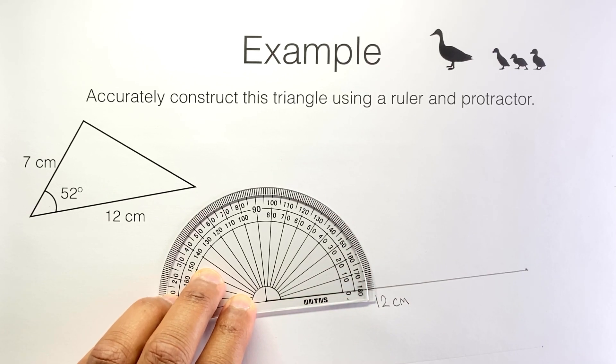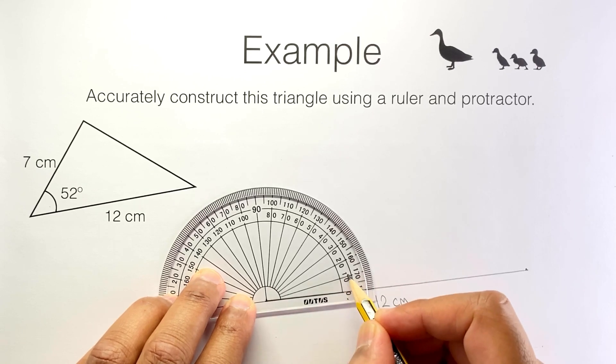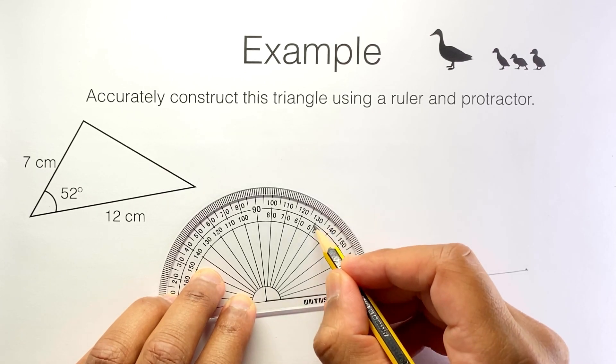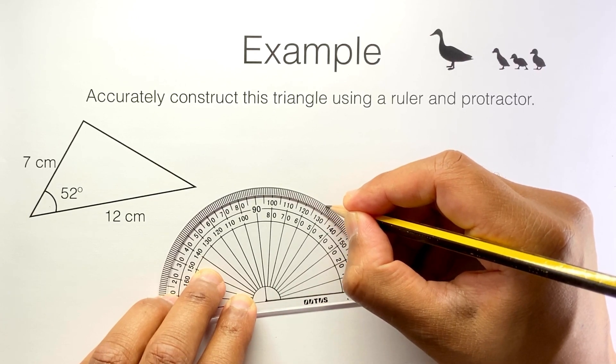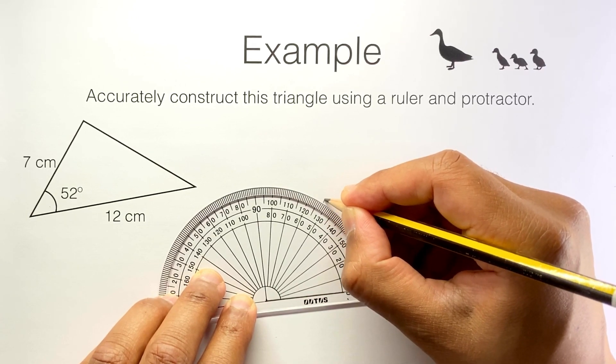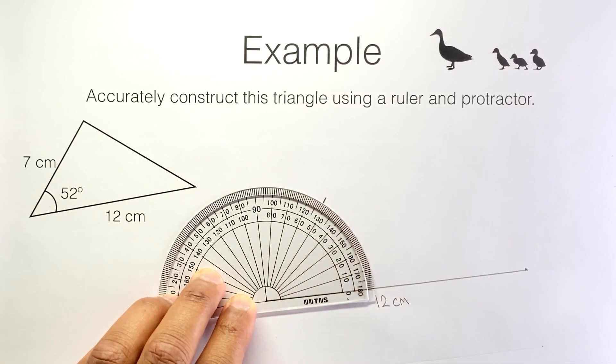Now I can measure 52 degrees. There's my zero. Zero, 10, 20, 30, 40, 50. So that's 50 and 52 will be right there. I make a mark like that.